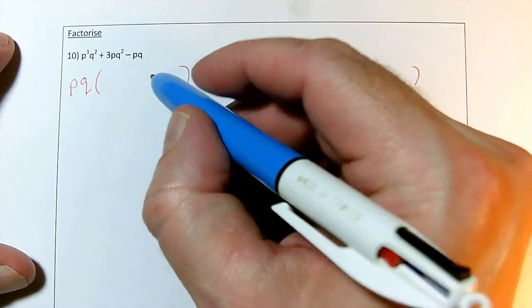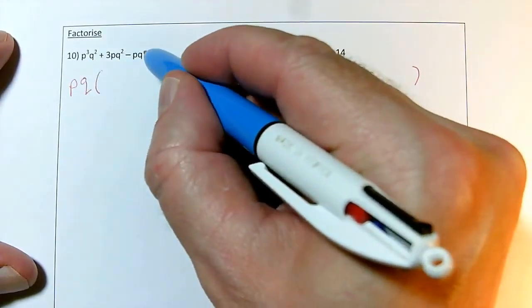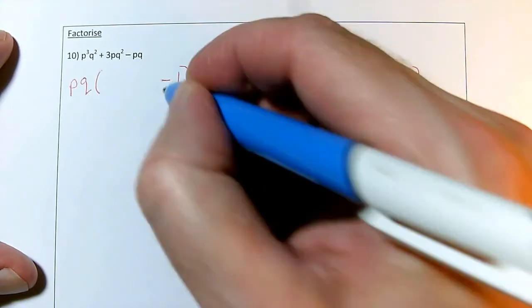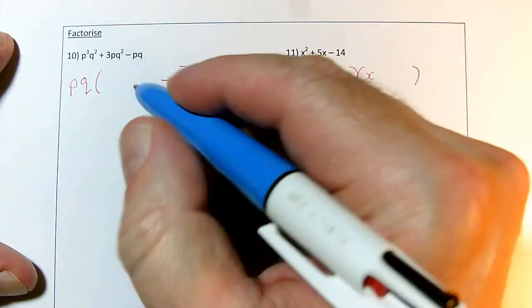So the easiest term to fill in is actually the last one, because obviously to get minus pq, I need to do this pq times minus 1. So I'm going to finish with a minus 1.